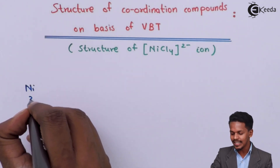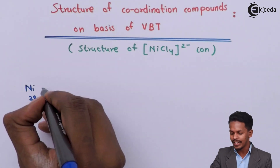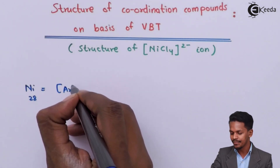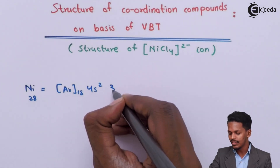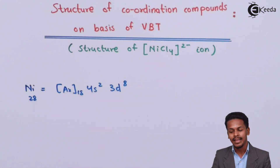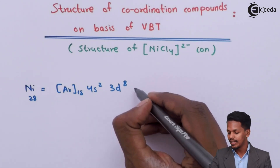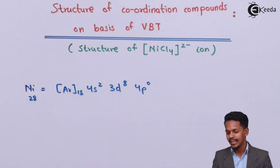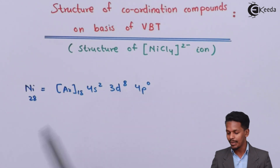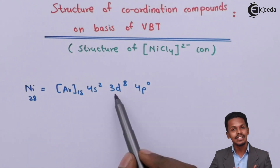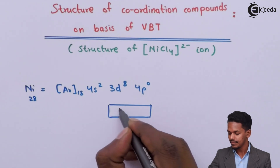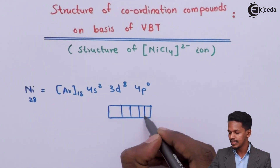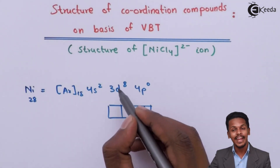Nickel has an atomic number of 28. So we can write its configuration as [Ar] 4s², and the d orbital consists of 5 orbitals with 8 electrons.